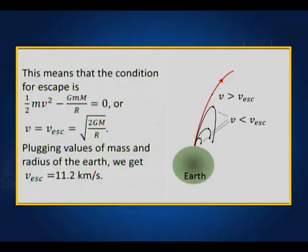The particle and the earth constitute a two-body system under mutual gravitational force, so the energy of this system must be conserved. The energy of the earth does not change much because it is a huge system, which means the energy of the particle is conserved. If it is zero at infinity, it must be zero at the surface of the earth. So half mv squared minus GMm by R equals zero, giving V escape equal to the square root of 2GM by R, which works out to 11.2 kilometers per second.